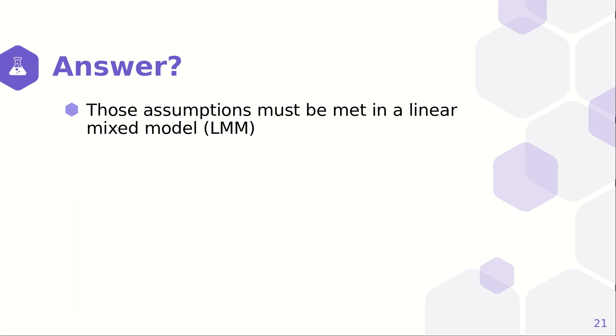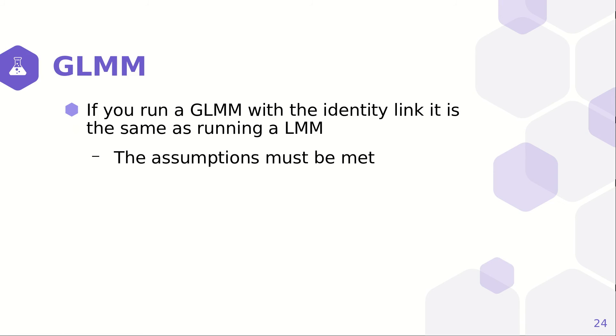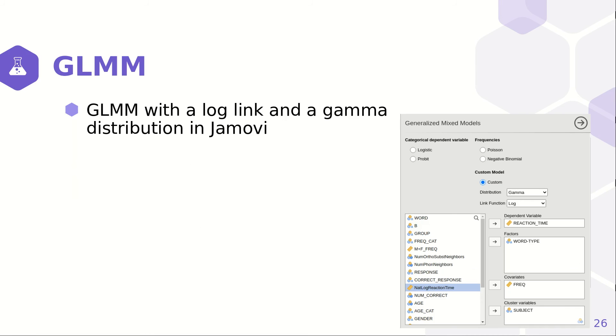Well, those assumptions must be met in a linear mixed model. Can you run the analysis in a generalized linear model instead? Because a generalized linear mixed model doesn't have those assumptions. Well, if you run a GLMM with the identity link, it's the same thing as running an LMM. The same assumptions must be met. But if you run a GLMM with a log link and a gamma distribution, the assumptions don't have to be met, and you don't have to transform your variable.